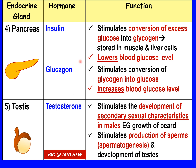These two hormones — insulin and glucagon — are involved in the regulation of blood sugar level, which is a form of homeostasis: the maintenance of a constant internal environment. The testes secrete the hormone testosterone, the male sex hormone, which stimulates the development of secondary sexual characteristics in males around age 14, such as growth of beard, lowering of voice, and development of muscles. Testosterone also stimulates the production of sperms (spermatogenesis) and the development of the testes.